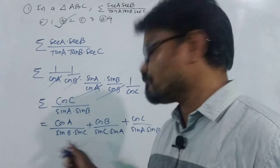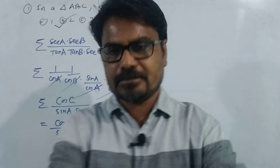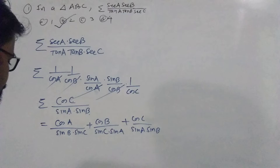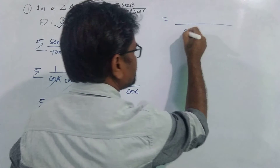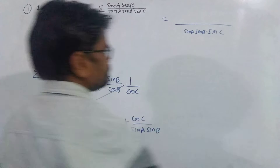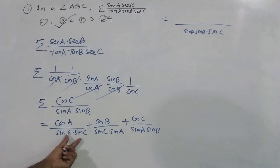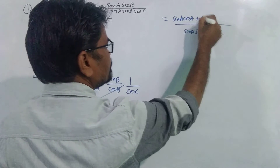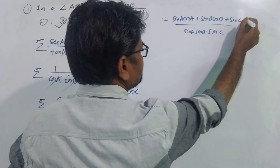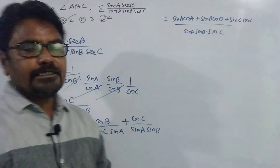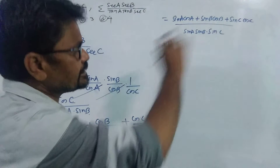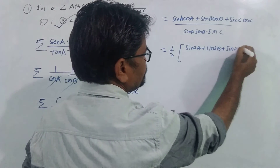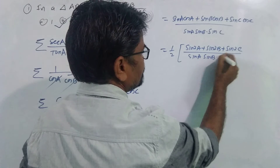Now we simplify this expression using trigonometric identities. Taking LCM as sin A · sin B · sin C, each term reduces: cos A · sin A remaining, giving sin A · cos A, and similarly sin B · cos B and sin C · cos C in the numerator. Each term sin A · cos A can be converted to sin 2A / 2, so factoring out 1/2, the numerator becomes (sin 2A + sin 2B + sin 2C) divided by sin A · sin B · sin C.